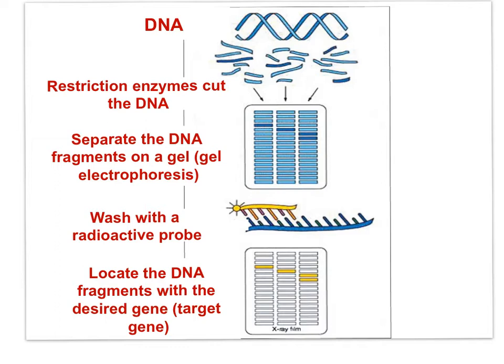DNA containing the target gene could be cut with a restriction enzyme, and then the fragments run on a gel to separate those fragments. The polyacrylamide gel would then be washed with a radioactively labeled probe — the probe represents a few known base pairs of the target gene — and in this way the target gene can be isolated.